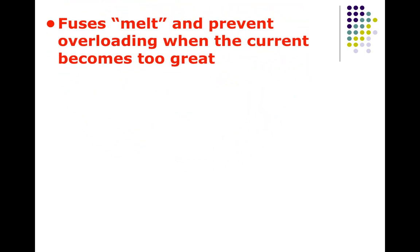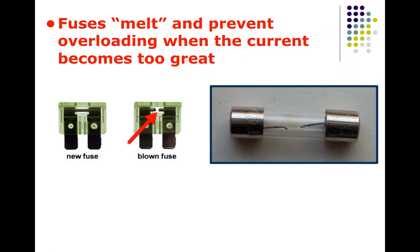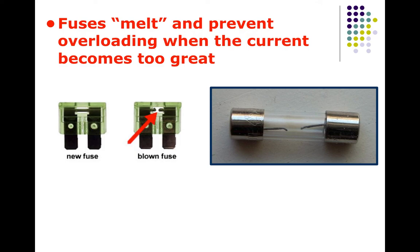We also have fuses elsewhere — like in your car. Fuses contain metals with a lower melting point. If they detect too much current, they get hot, melt, and open up the circuit. The electrons can't jump across the gap, so it stops whatever you're using from drawing electric current. It's another safety device to prevent too much electricity from flowing through.